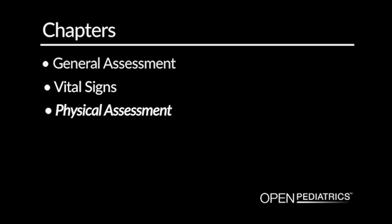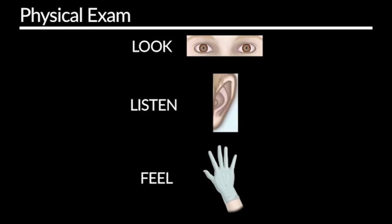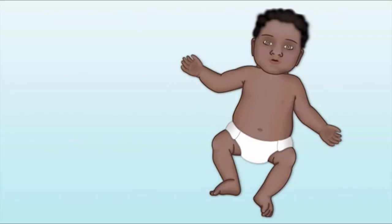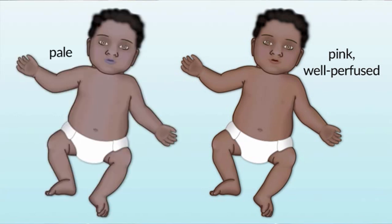Physical Assessment. Now we'll move on to a comprehensive physical exam of the cardiovascular system. We'll use a look, listen, and feel model. First you'll want to look for any signs or symptoms of diminished cardiac output or poor cardiac function. You'll be able to tell this by color, perfusion, and general overall appearance of your patient. The color of your patient should be pink and well perfused. If the child looks incredibly pale, this could indicate a number of things from anemia to poor cardiac output or some clamping down or narrowing of the patient's blood vessels in response to shock.